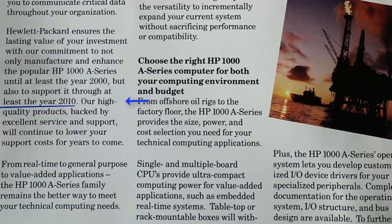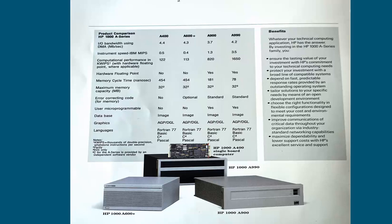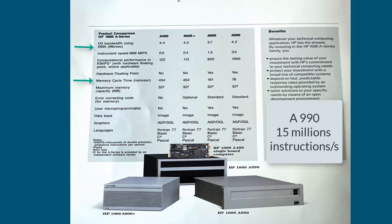On page 2 of the same brochure you can see the different HP1000 ACL models. Notice that the I/O bandwidth is almost the same from the smallest to the largest model — approximately 4 MB per second. But looking at the memory cycle time, it goes from 454 ns for the A400 down to 78 ns for the A990, a factor of almost 6. In fact, the A990 could execute up to 50 million instructions per second and up to 1 million floating point instructions per second.